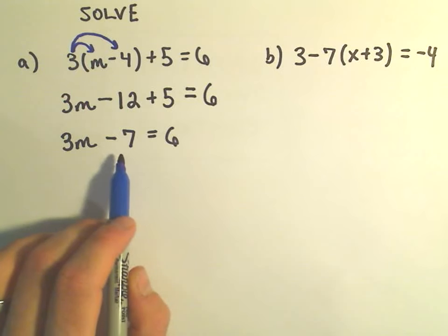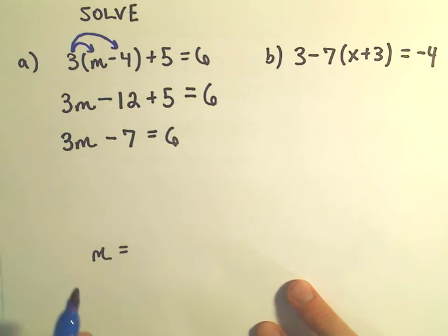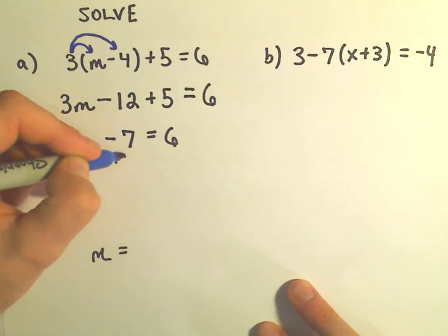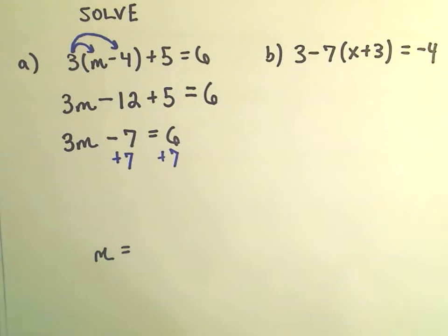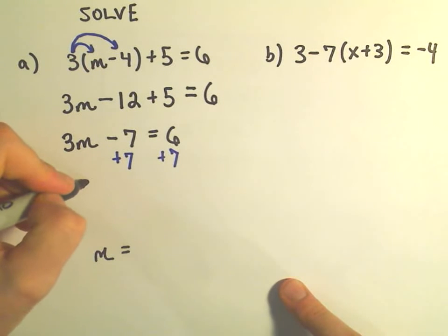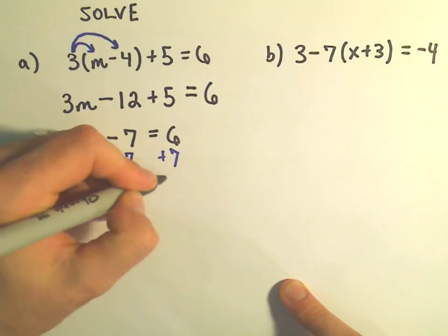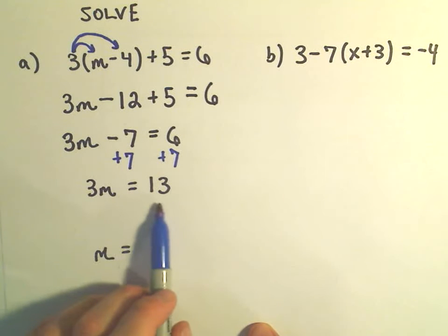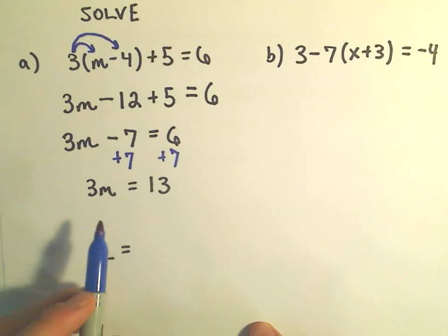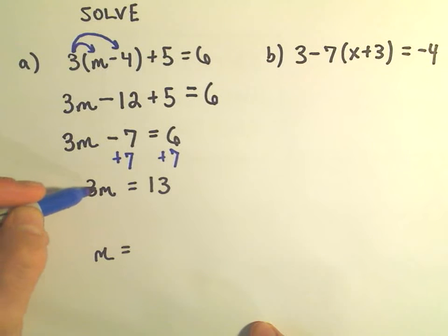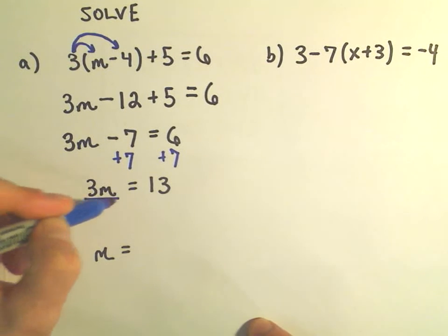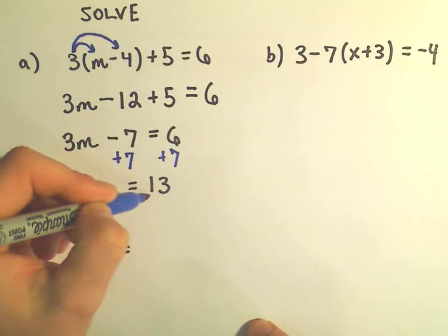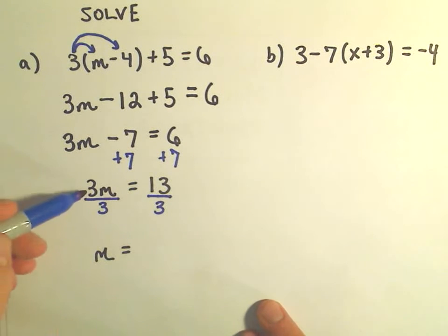So the negative 7, what I'm going to do is I'm going to bring that to the other side, and I can do that by adding 7 to both sides, and then we're left with 3m equals 13. Now at this point I have a single term on the left involving m, I have a single term on the right that's just a constant, since we're multiplying by 3 we want to undo that, so I'm going to divide both sides by 3, 3 divided by 3 is just 1, so that goes away.